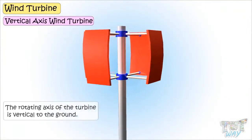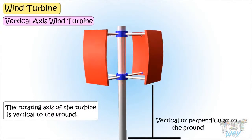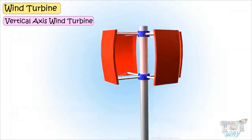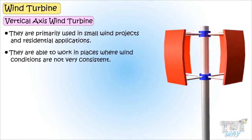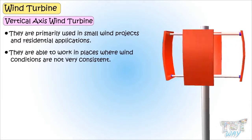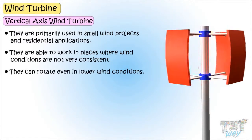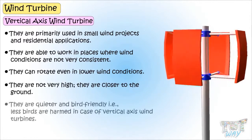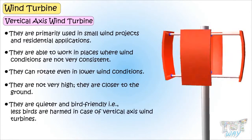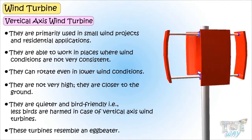In the case of vertical axis wind turbines, the rotating axis of the turbine is vertical, or perpendicular, to the ground. They are primarily used in small wind projects and residential applications. They are able to work in places where wind conditions are not very consistent, and they can rotate in even lower wind conditions. They are not very high — they are closer to the ground, quieter, and more bird-friendly, meaning fewer birds are harmed. These turbines resemble an egg beater.